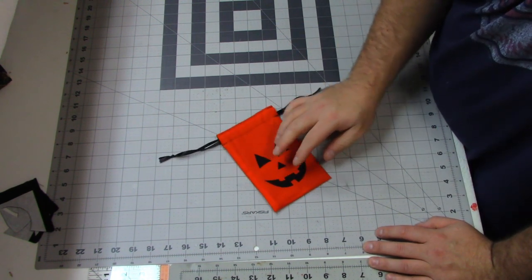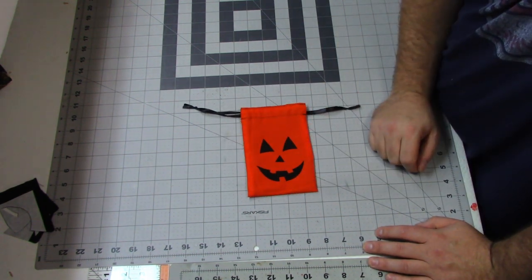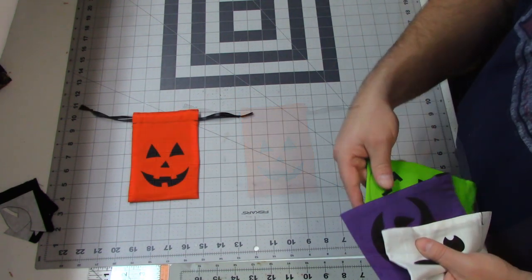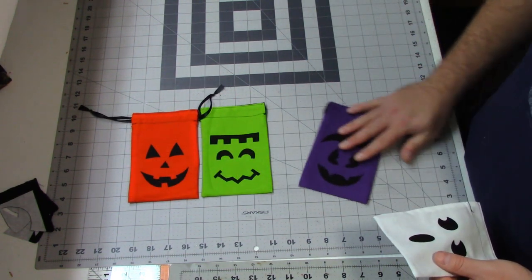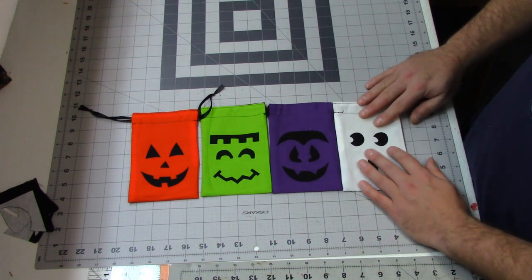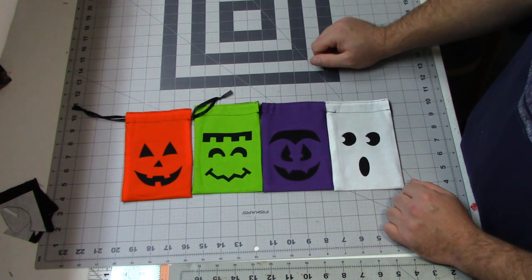Now the final thing to do is fill it up with candy and deliver it to your little monsters. And here are the other ones that I made. I still have to put the ribbon in them, but I think they turned out great.